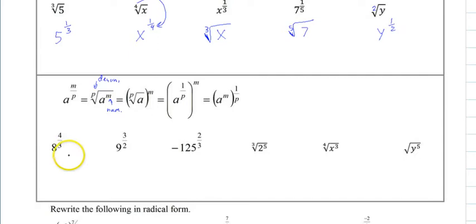So our first one would be the cube root of 8, and you can put the power of 4 inside or outside. That's all you have to do. So this one would be the square root of 9, the power outside, or square root of 9, the power inside.